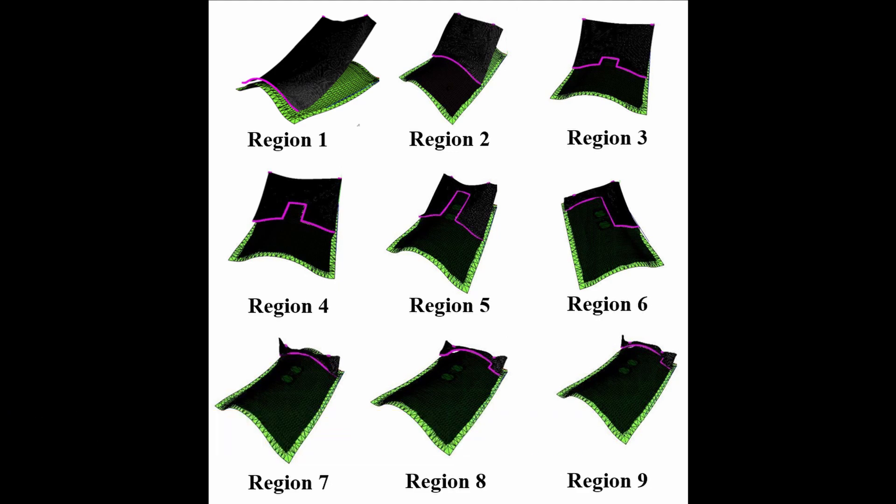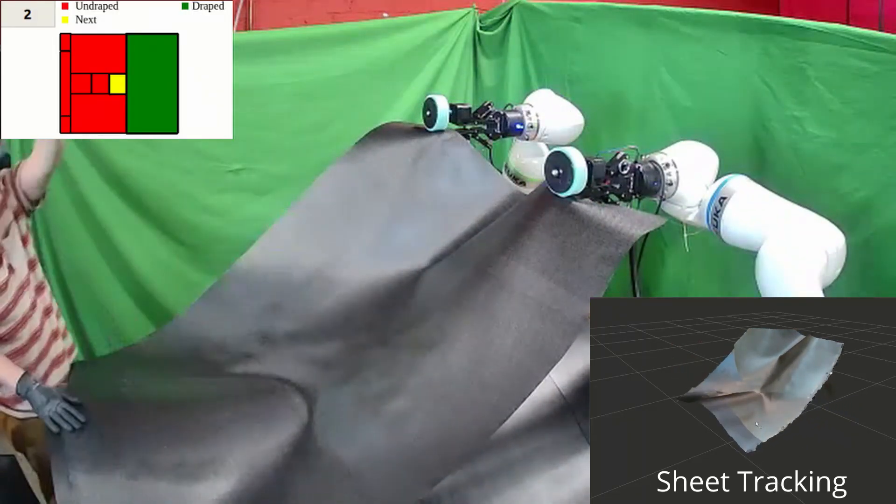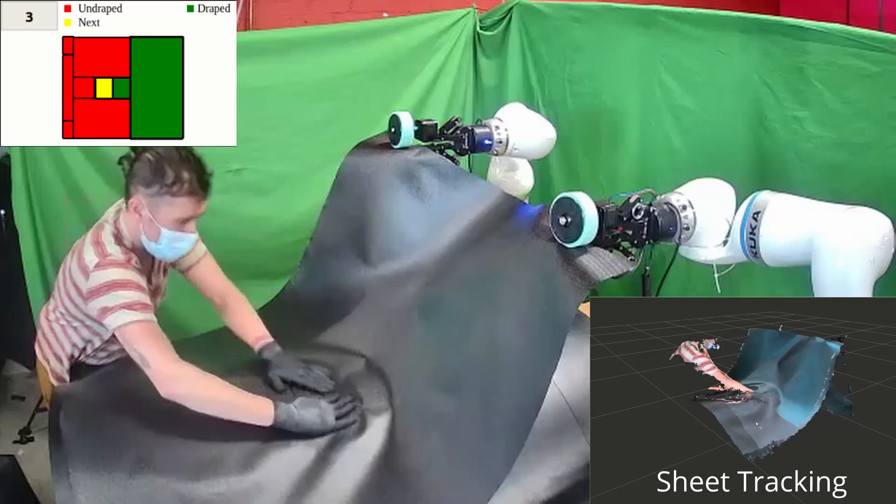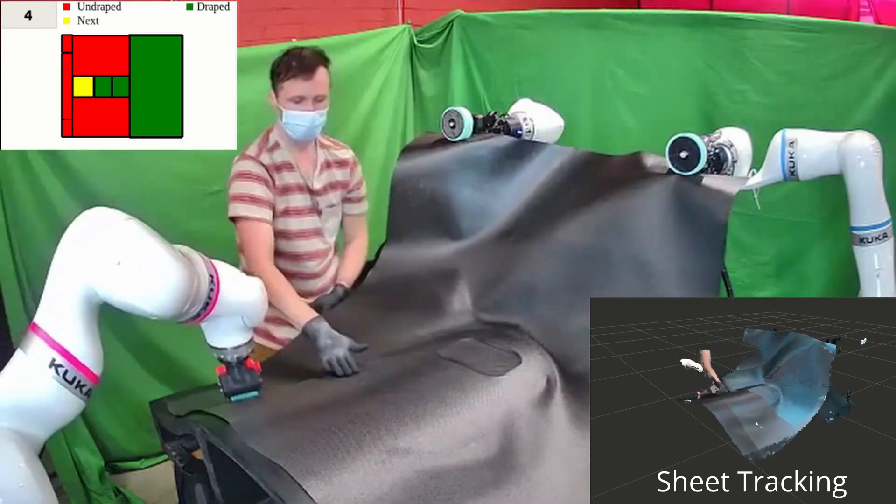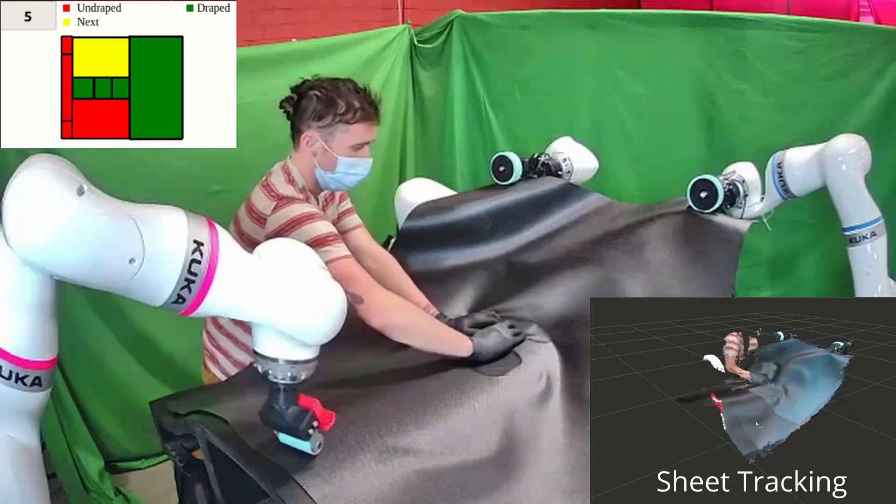The computed grasp plans are used to generate feasible robot trajectories for the sequential layup process. In the layup operations, the robot transitions between the optimized grasping locations by following the computed trajectories.